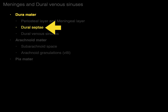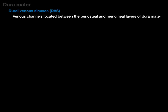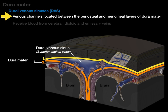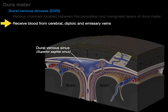There's the falx cerebri. Now we're going to talk about dural venous sinuses. Dural venous sinuses are venous channels located between the periosteal and meningeal layers of the dura mater. They receive blood from the cerebral veins primarily, but also from diploic and emissary veins. There is the dura mater with its two layers, and between them is the dural venous sinus — in this case showing the superior sagittal sinus. The dural venous sinuses receive blood primarily from cerebral veins, which you can see dumping into the dural venous sinus.